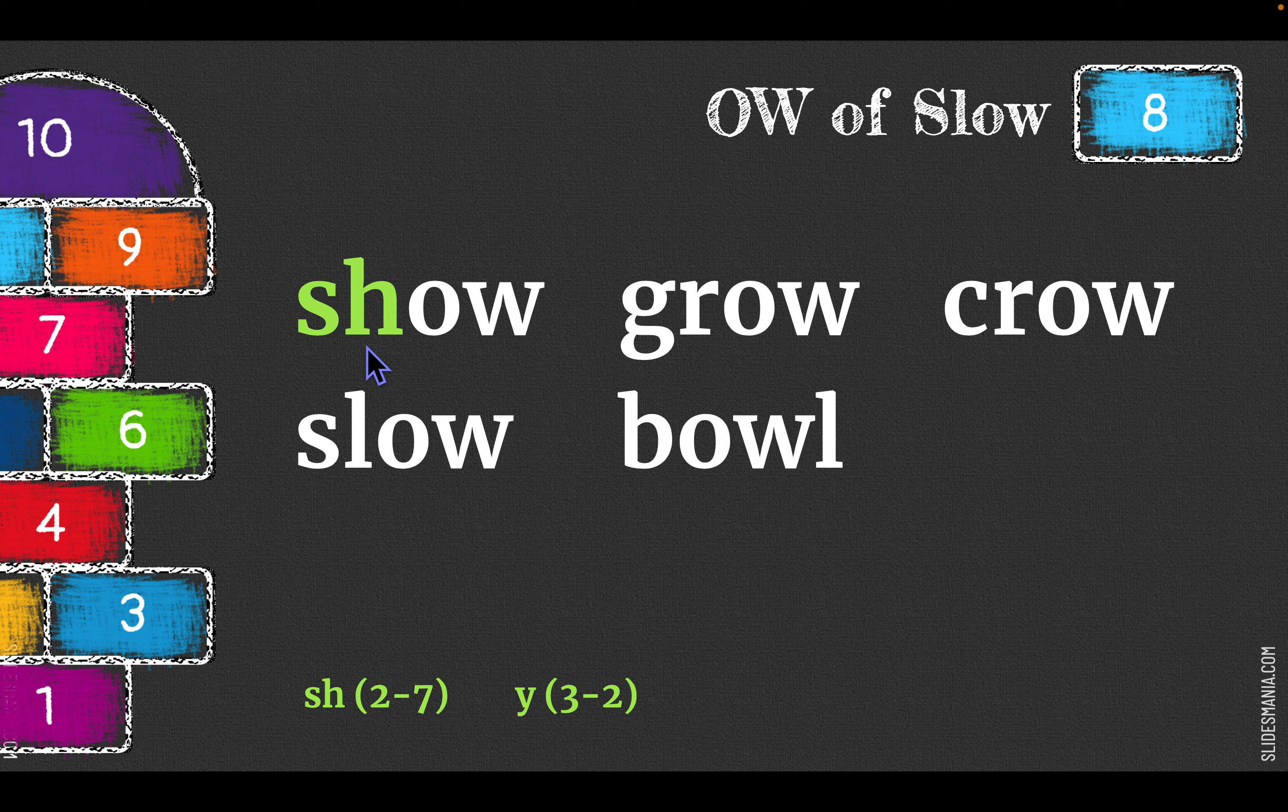SH says SH, which we covered in level two, lesson seven. Show, grow, crow. A crow is a type of bird.